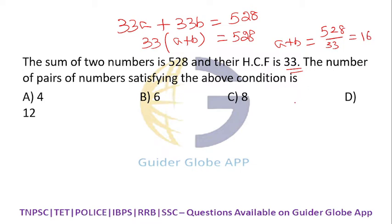In how many combinations can I get 16? 1 plus 15, 2 plus 14, 3 plus 13, 4 plus 12, 5 plus 11, 6 plus 10, 7 plus 9, 8 plus 8. If we continue it will become 9 plus 7, which already came, so let us not repeat.